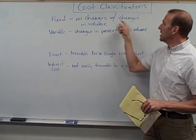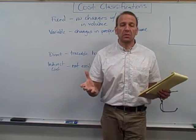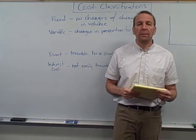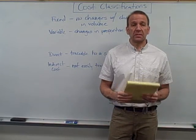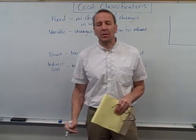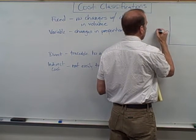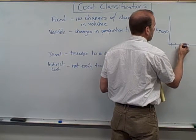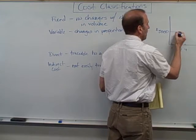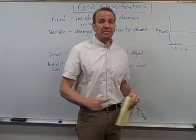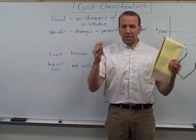Fixed costs are costs that don't change with changes in volume, at least within the relevant range. Let's assume that we're manufacturing tables — simple tables, some lumber and a little bit of hardware. We manufacture tables in the facility that we're renting. Let's say our rent is five thousand dollars a month. Over here I've got a little graph — five thousand dollars right here, and this axis shows one table, two tables, three tables, and so on. It doesn't matter how many tables we manufacture, the rent is five thousand — it's fixed. No changes with changes in volume.